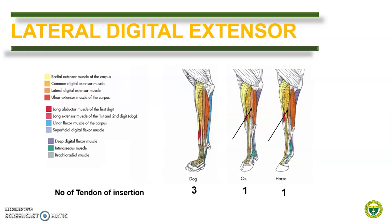The lateral digital extensor is situated caudal to the common digital extensor muscle on the lateral surface of the antebrachium. In horse, there is only one insertion at the lateral side of the cannon bone. Also, one tendon of insertion is present in cattle and it is present at the fourth digit. In dogs, it inserts on digits 3, 4, and 5.